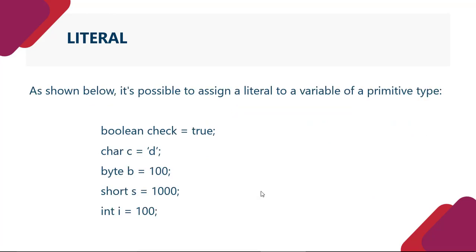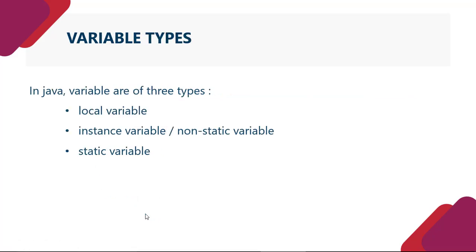As shown below, it's possible to assign a literal to a variable of a primitive type. Jaise ki agar humne yahan par define kara - yeh ho gaya data type, yeh ho gaya variable name aur yeh ho gaya literal. Boolean check is equal to true - yahan par jo boolean hai woh hai data type, check variable aur true basically literal. Isi tarah se char c is equal to d. Byte b is equal to 100, short s is equal to 1000, integer i is equal to 100.